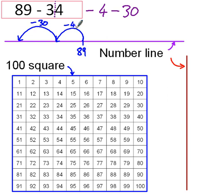What does that look like? So 89 take away 4 is 85, and 85 take away 30 is 55. So when I do it like that with a number line, I barely even need to think about what I'm doing.